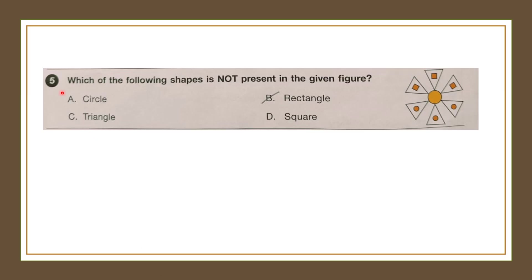Question number 5: Which of the following shapes is not present in the given figure? Circle is there, triangle — there are so many triangles, square — there are squares. Rectangle: there is no rectangle in this figure. So our answer is option B, rectangle.